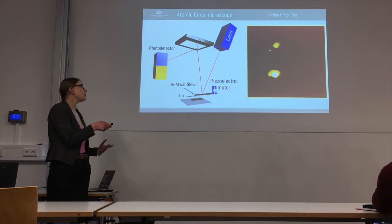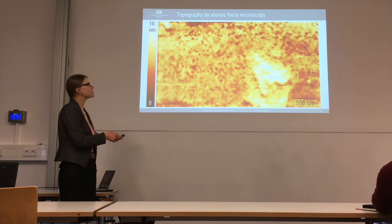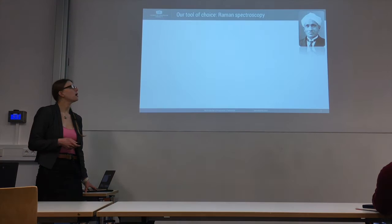We thus map point by point the height of the sample. As a result we get such an image — here for example, iron oxide nanoparticles on a flat surface. But to be honest, when we get a sample, many times we just get something like this and we don't know what the materials are. So what do we do? How can we find out the chemical composition?